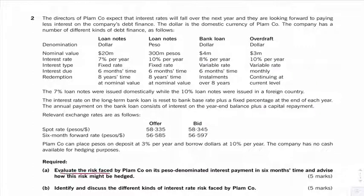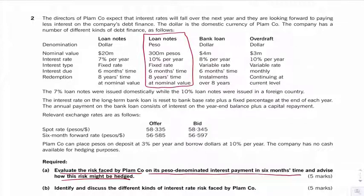So, evaluate the risk faced by the company on its Peso-denominated interest payment in six months time and how might you hedge against it. Okay, so this is the one. You've got this thing to hedge against. It says in six months time. So what have we got?